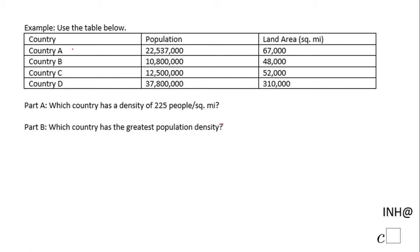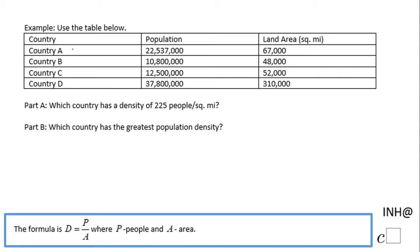On part b, which country has the greatest population density? Notice the concept of density here — density is defined as the number of people (the population) over the area. To answer parts a and b, we need to calculate the density of each country.